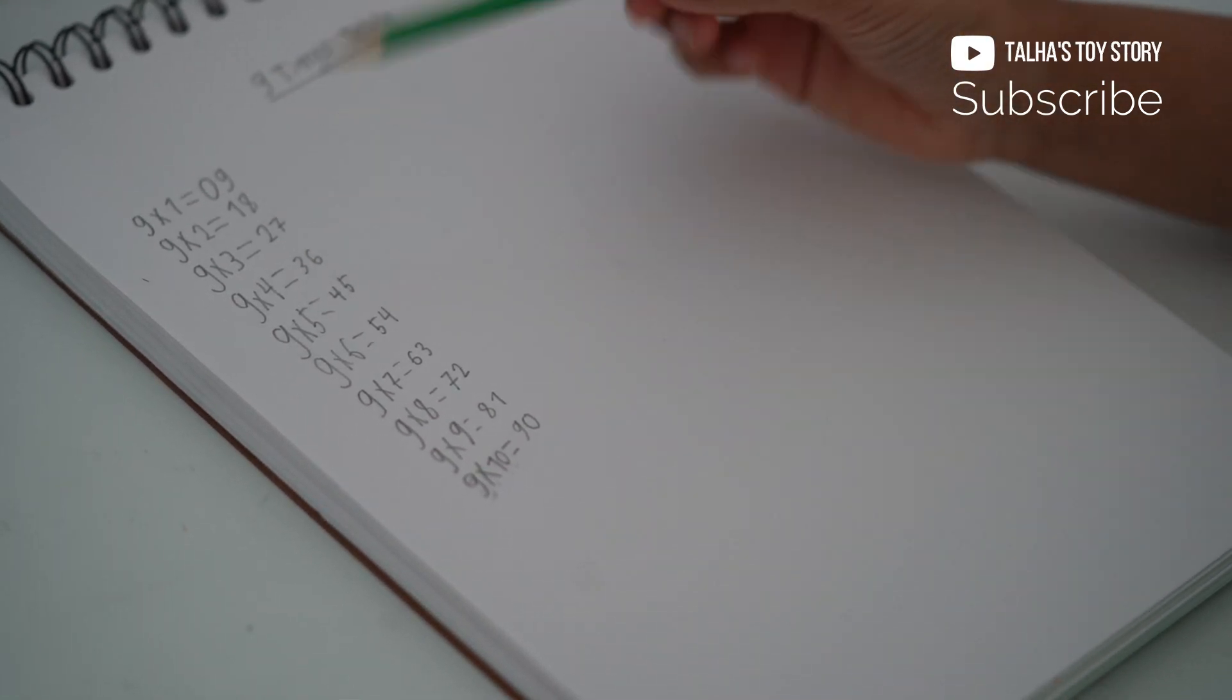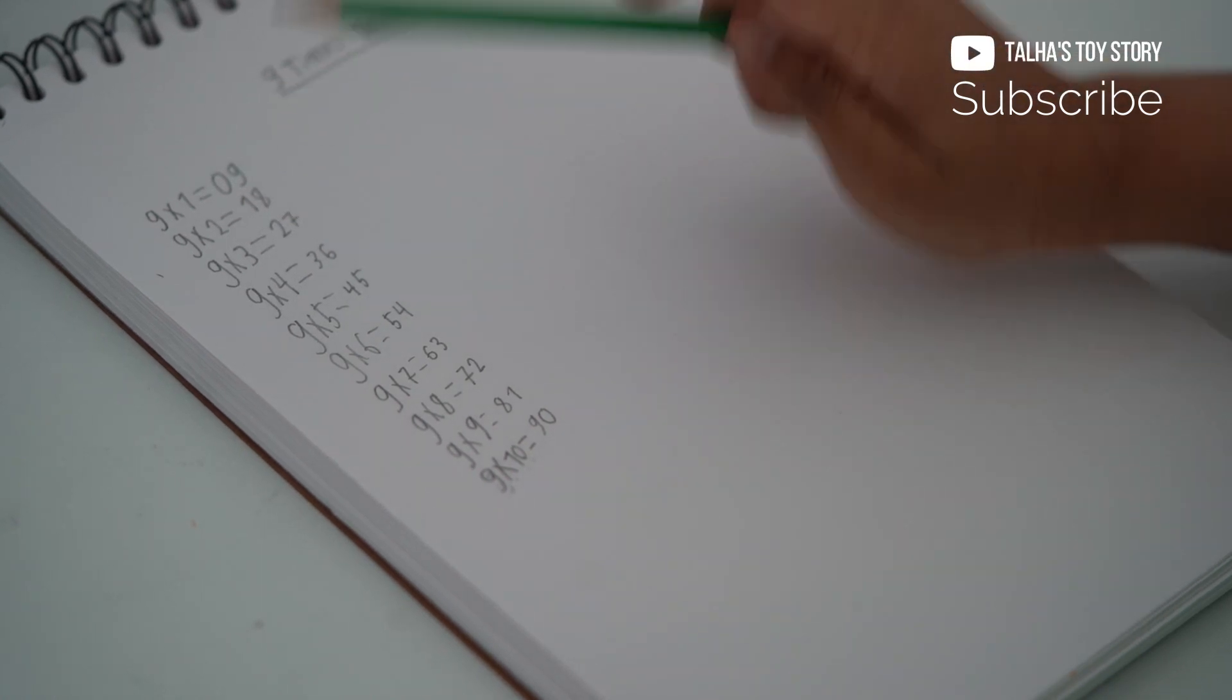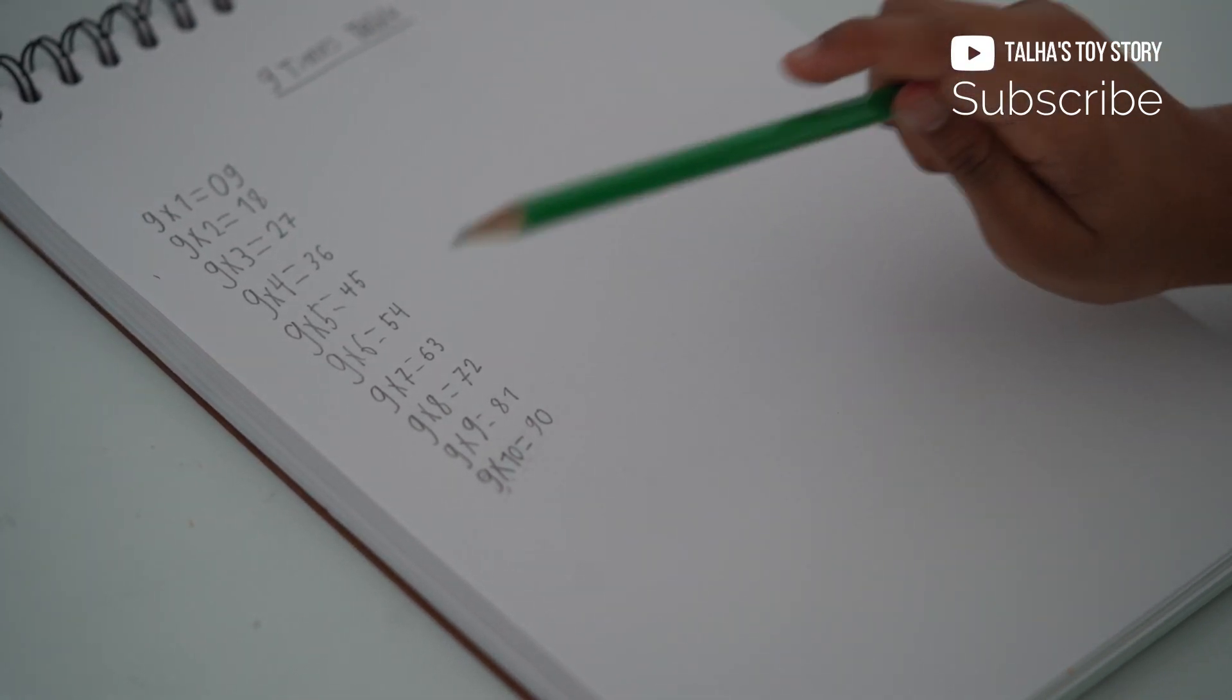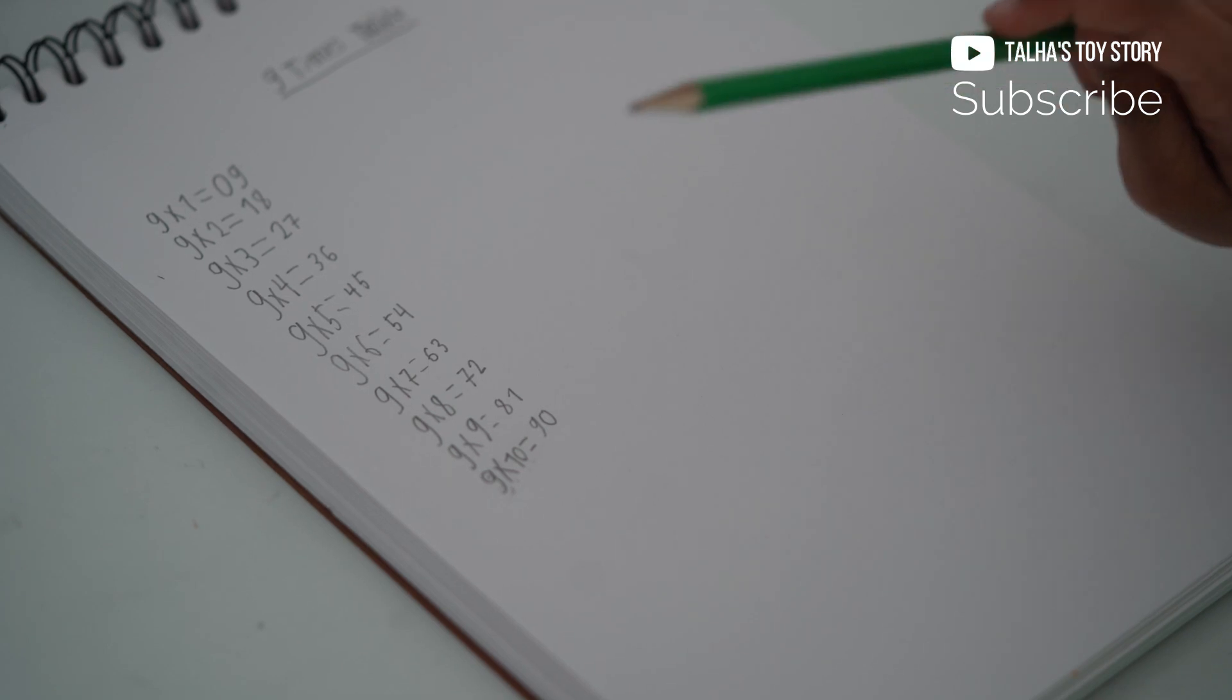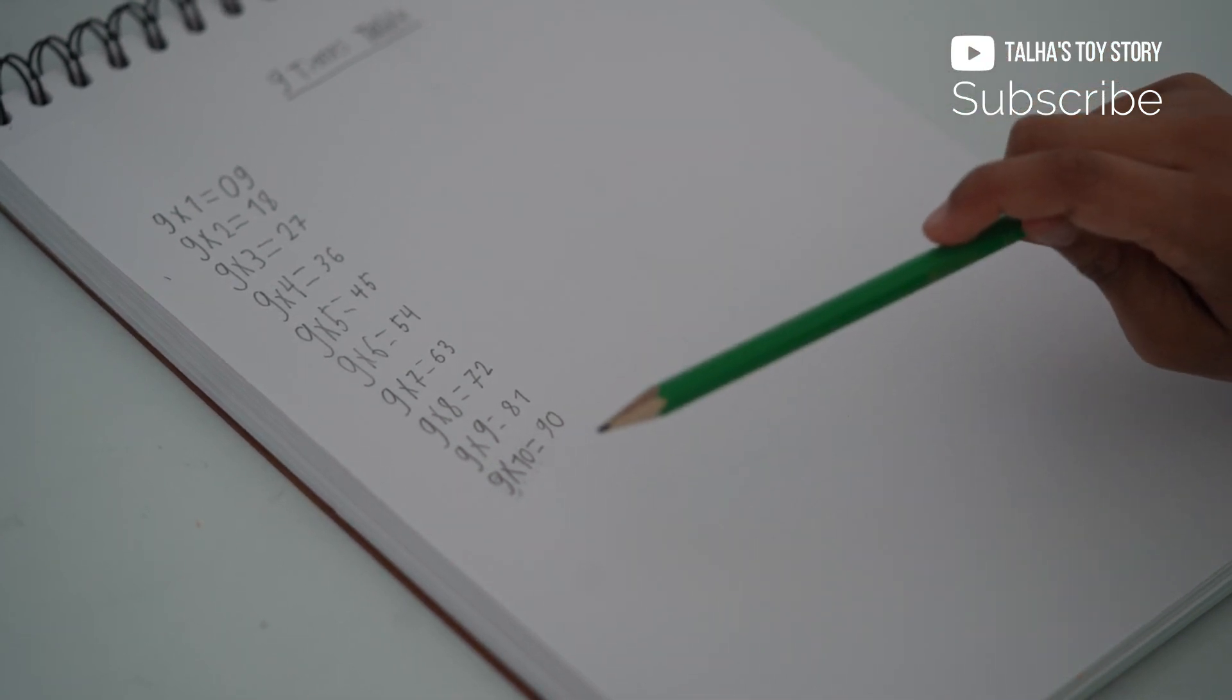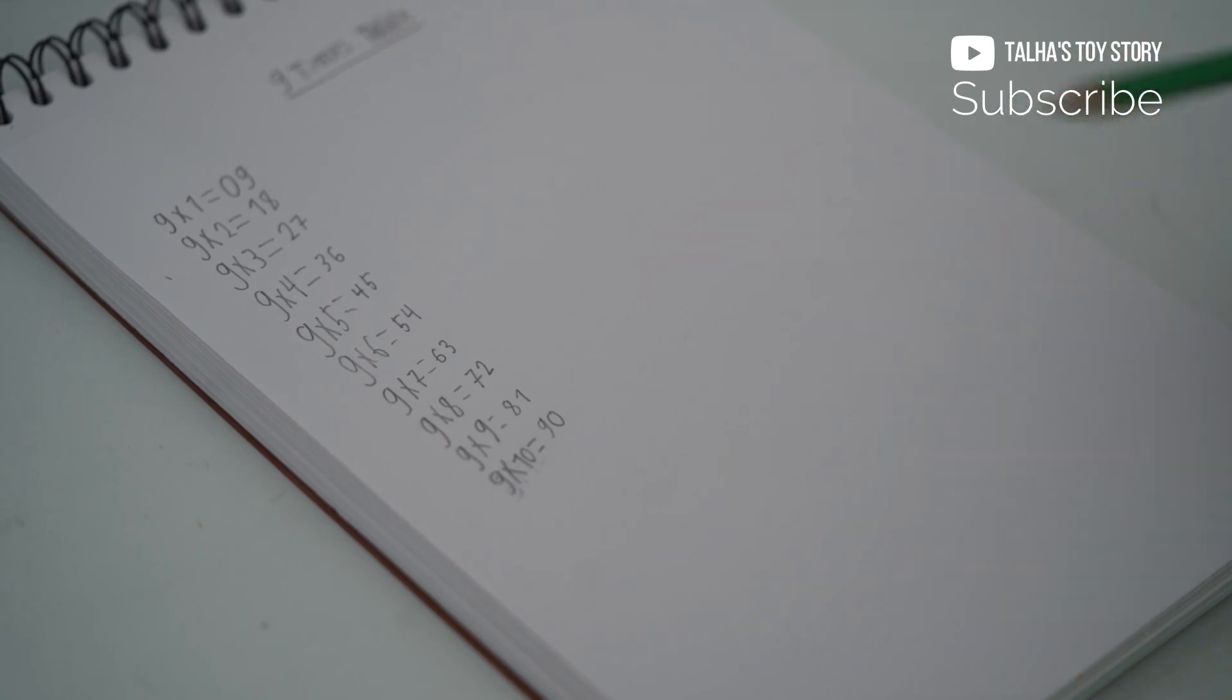9 times table: 9×1=9, 9×2=18, 9×3=27, 9×4=36, 9×5=45, 9×6=54, 9×7=63, 9×8=72, 9×9=81, 9×10=90.